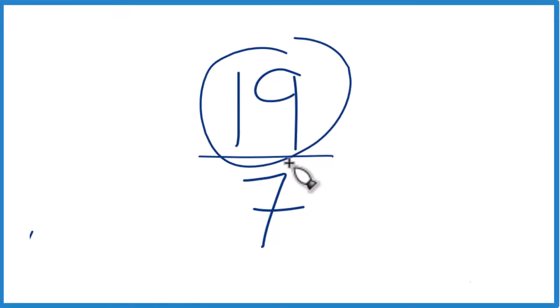Let's write the fraction 19 sevenths as a mixed number. So right now it's an improper fraction. The numerator 19 is bigger than the denominator 7. So we want to get this to a mixed number.